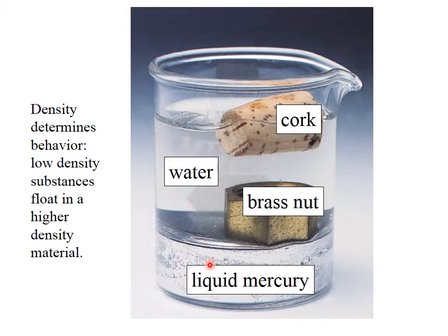The liquid mercury, because its density is so much greater than both the brass nut and the water, it sinks. The cork has a density of around half a gram per milliliter and sometimes even less depending on the cork. And as a result, its density is much less than that of water, so it floats.